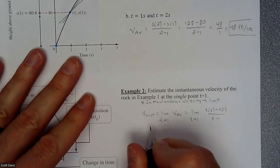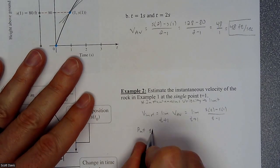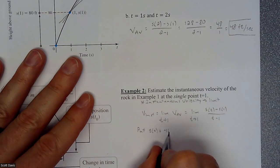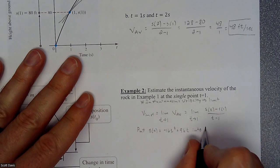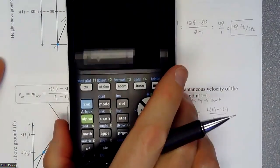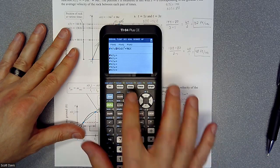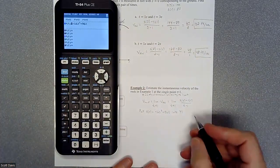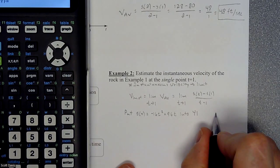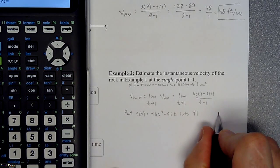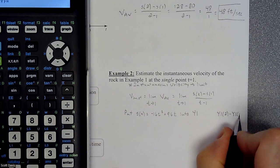Here's the idea: we're going to start by putting our position function, negative 16t² plus 96t, into y1 on the calculator. Then we're essentially going to compute different rates of change by doing y1 of some value t, minus y1 of 1, divided by t minus 1.